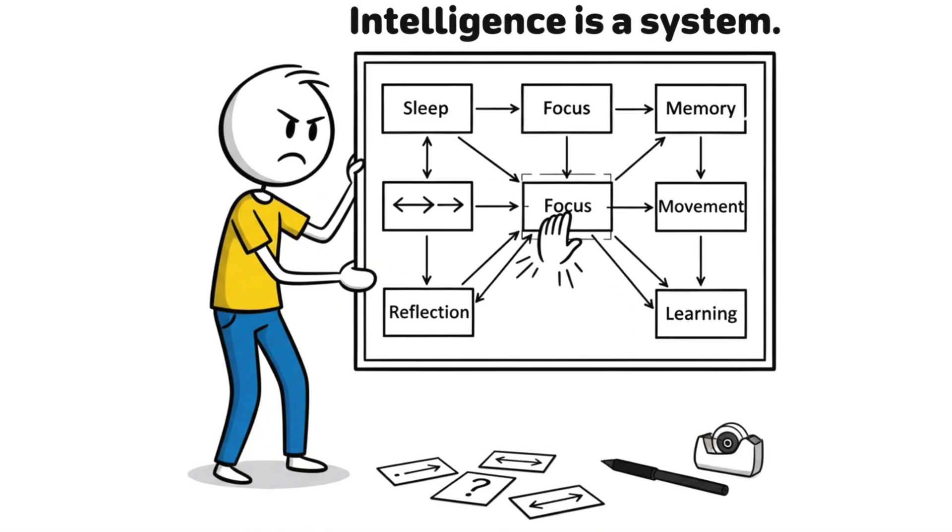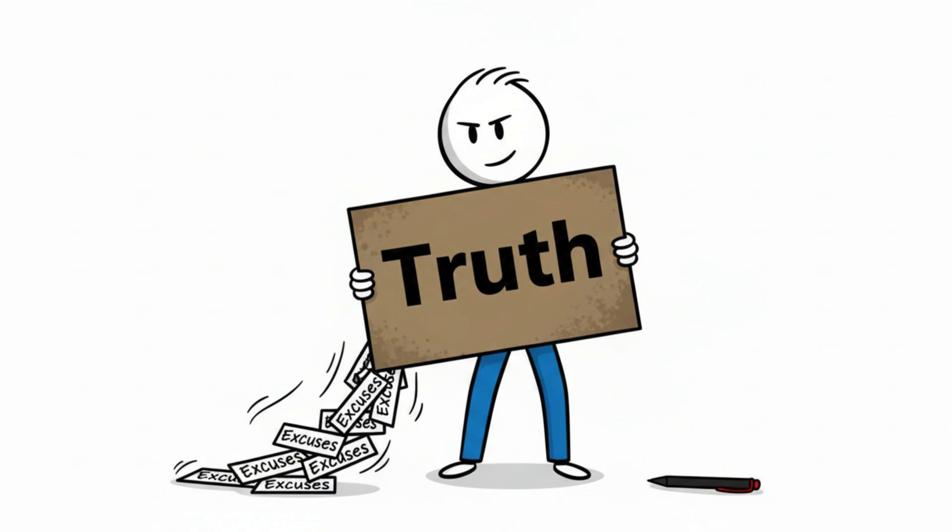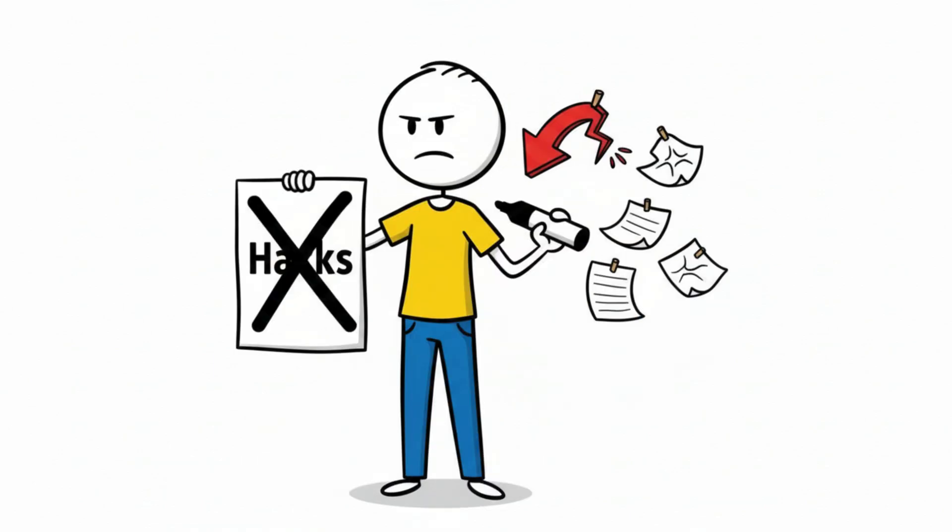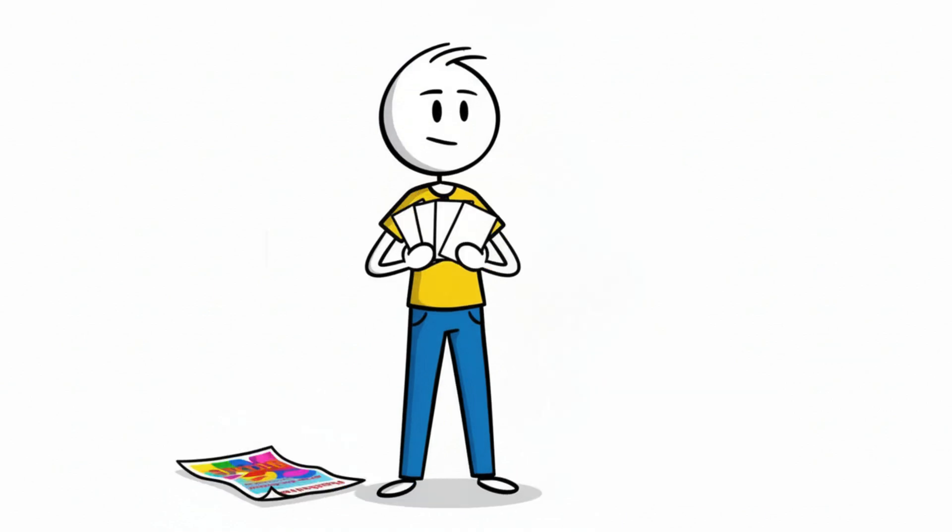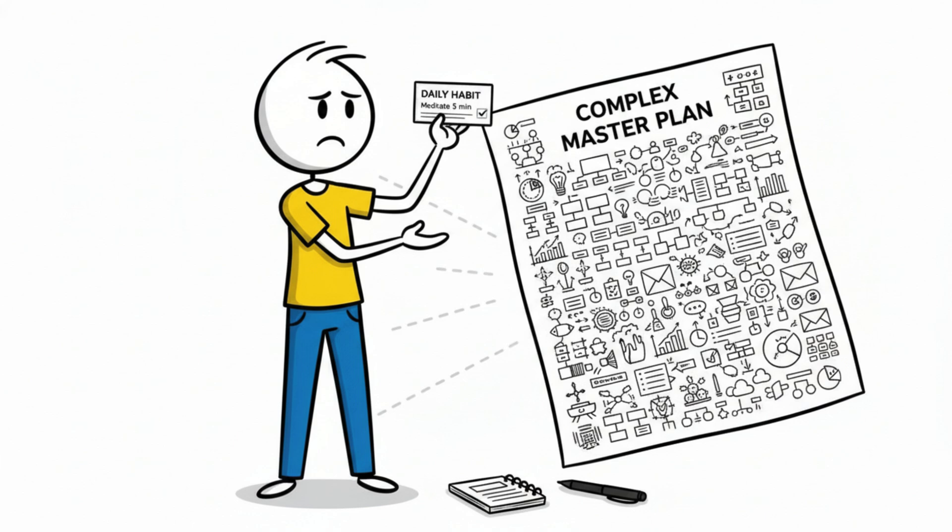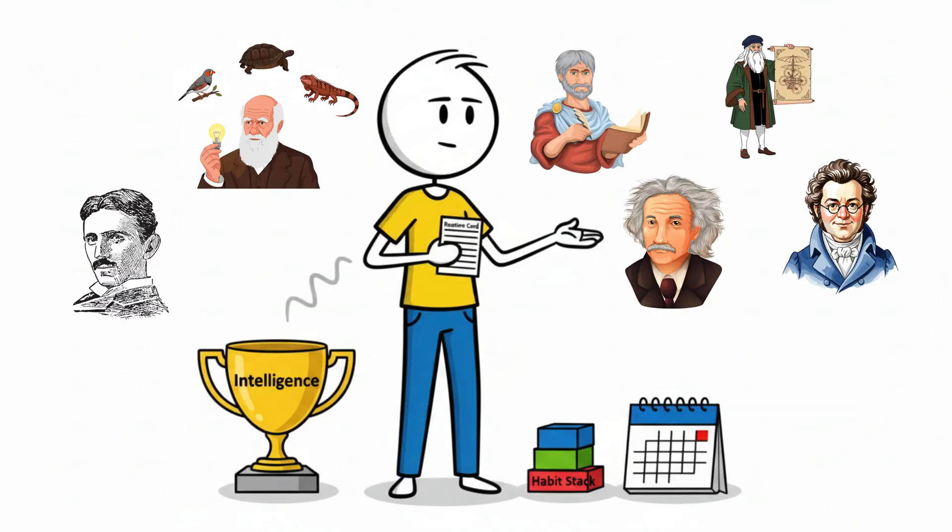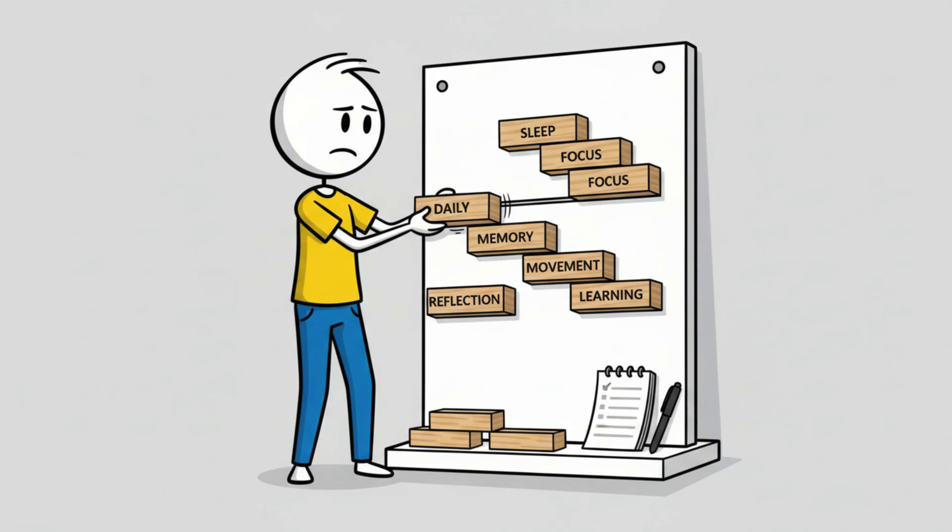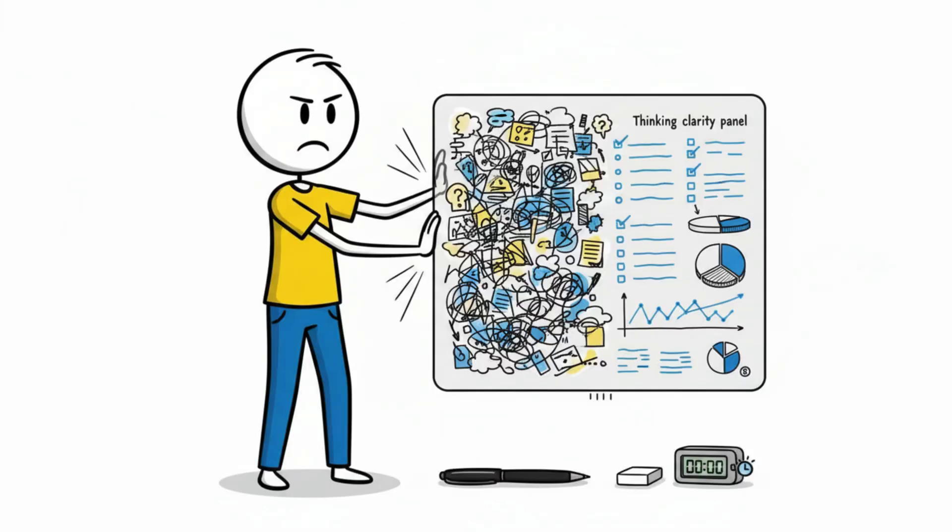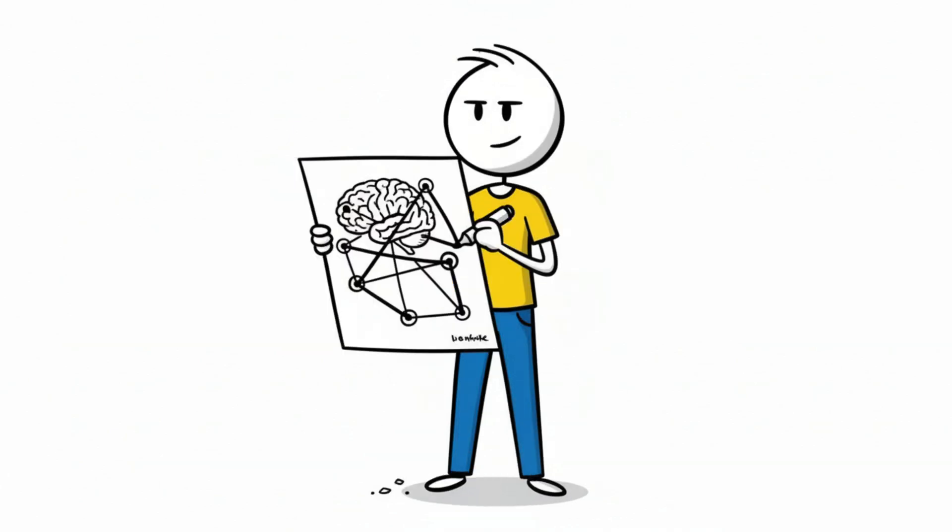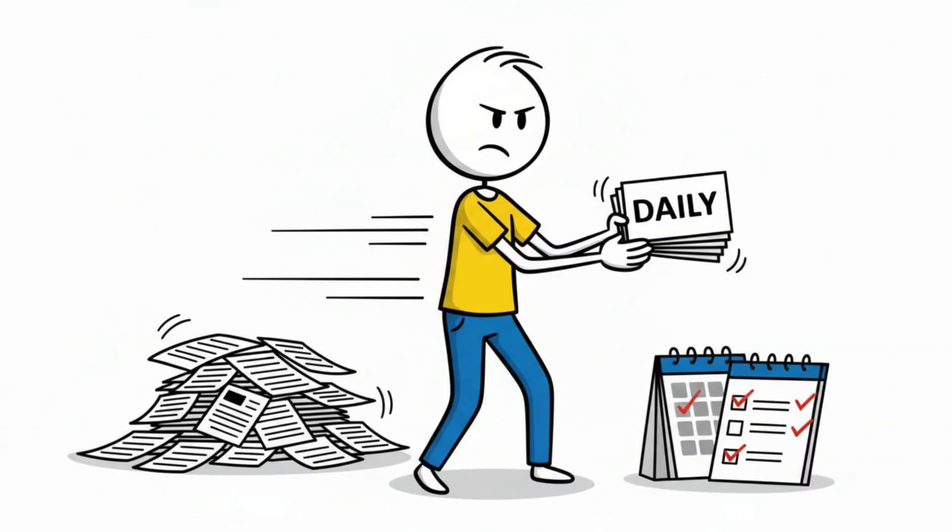Intelligence is a system. And here's the truth most people resist. IQ doesn't increase through hacks. It increases through habits. The kind that look unglamorous, repetitive, and almost too simple to matter. The greatest minds in history didn't chase intelligence like a trophy. They built environments and routines that allowed intelligence to grow. If you want to think clearer, learn faster, and build a stronger mind, start with habits, not information.